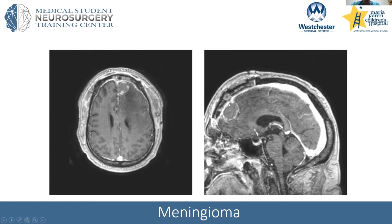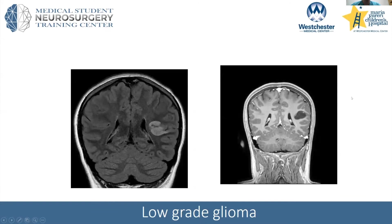These parasagittal meningiomas can be interesting because it's very important to figure out the relationship with the superior sagittal sinus. Depending on factors like the patient's age, you may resect the lesion but at the time of surgery assess if it's invading the sagittal sinus — you may choose to leave some tissue and follow with imaging. If someone asks which part of the sinus is safer to sacrifice, my answer would be the anterior third.